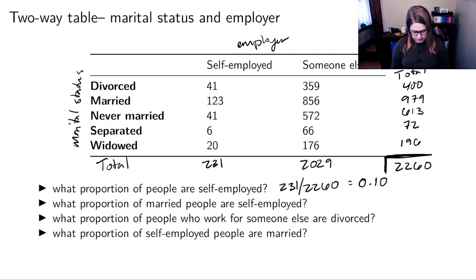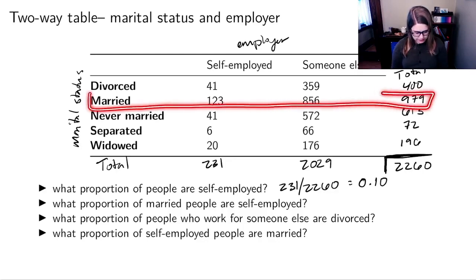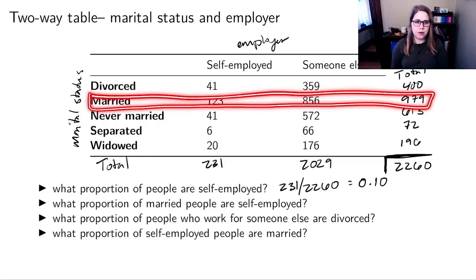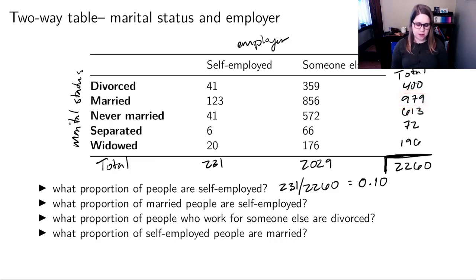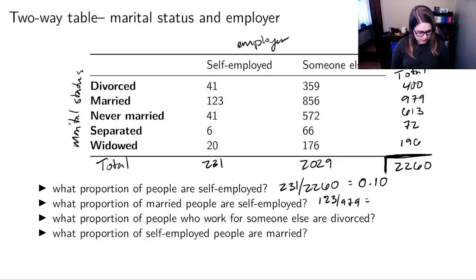Next I'm going to think about what proportion of married people are self-employed. That means I look at the married row in my data set — out of the married people, what proportion are self-employed. The denominator is 979 and the numerator is 123, giving about 0.126.